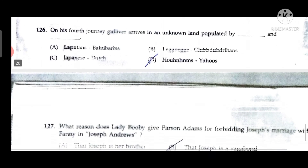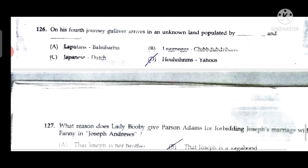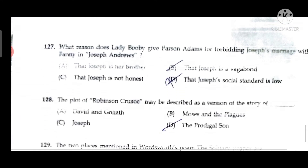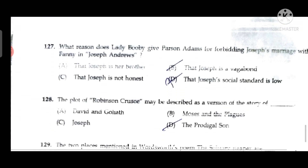Question 126: On his fourth journey, Gulliver arrives in an unknown land polluted by Houyhnhnms and Yahoos. Question 127: Lady Booby gives the reason of Joseph being a vagabond for forbidding his marriage with Fanny in 'Joseph Andrews.' Question 128: The plot of 'Robinson Crusoe' may be described as a version of the story of the Prodigal Son, in which the son goes against the wishes of the family and later comes back.